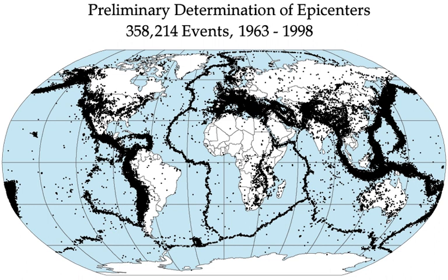The topmost brittle part of the Earth's crust, and the cool slabs of the tectonic plates that are descending down into the hot mantle, are the only parts of our planet which can store elastic energy and release it in fault ruptures. Rocks hotter than about 300 degrees Celsius flow in response to stress; they do not rupture in earthquakes. The maximum observed lengths of ruptures and mapped faults which may break in a single rupture are approximately 1,000 kilometers.